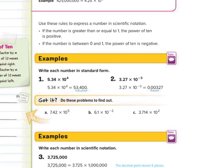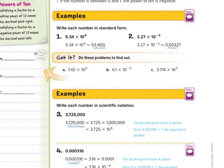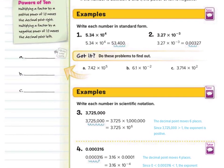Looking at our guided examples first: write each number in standard form. For 5.34 times 10 to the 4th — since the exponent is positive 4, we move the decimal point 4 spots to the right, ending up with 53,400.